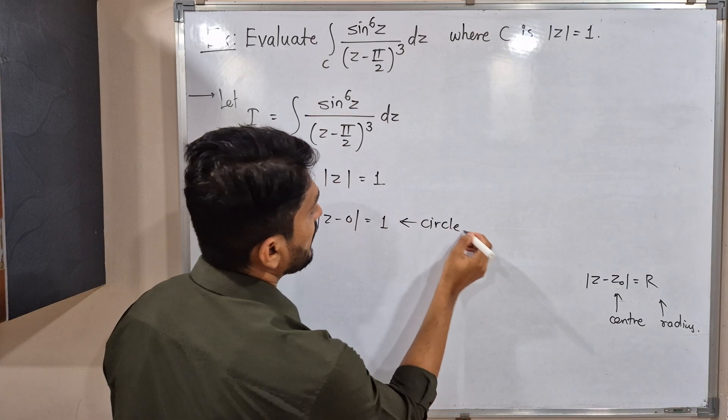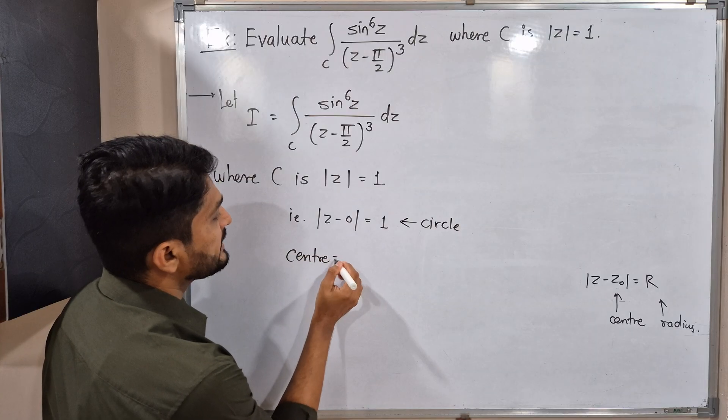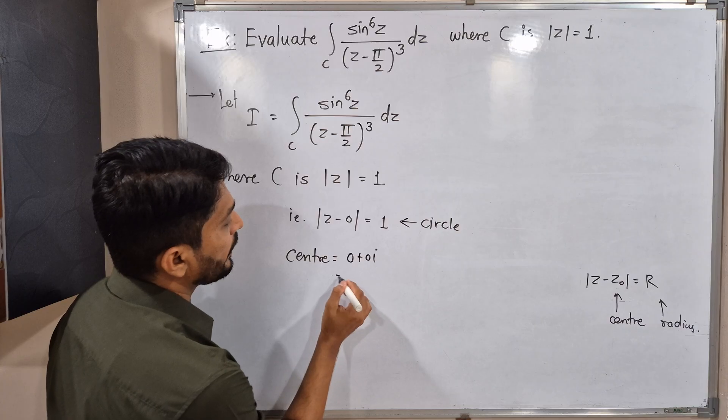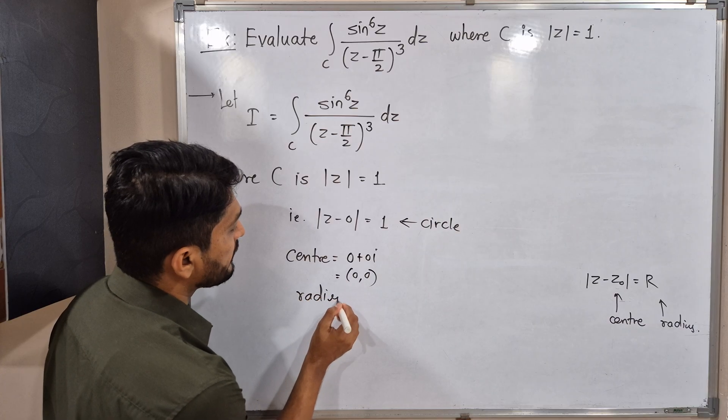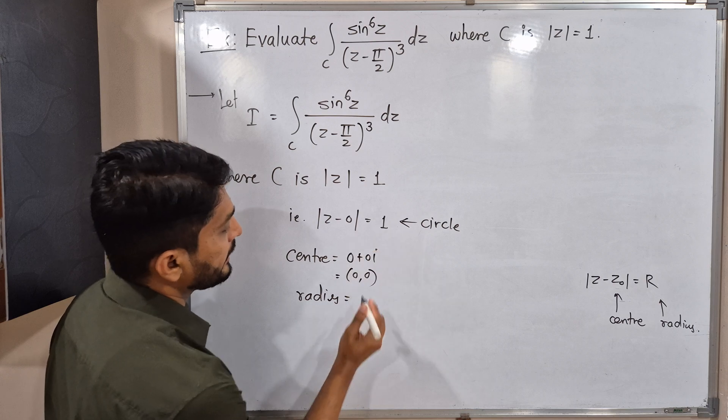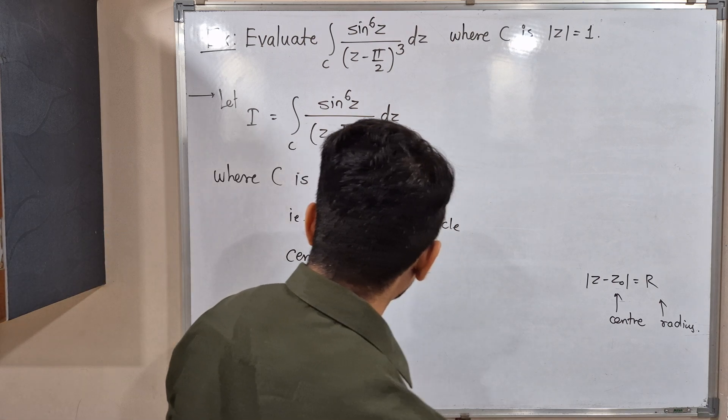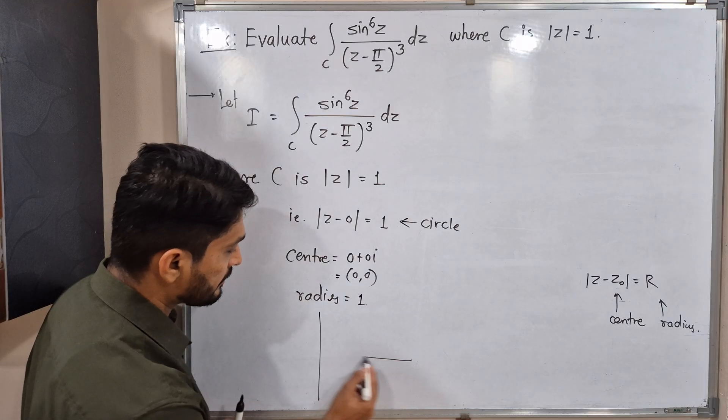You can easily tell me its center—the center, that means z naught, which is 0. Basically 0 means 0 plus 0i, so the center is (0, 0). And what will be its radius? Radius is this right-hand side, which is 1, which is always a real number.